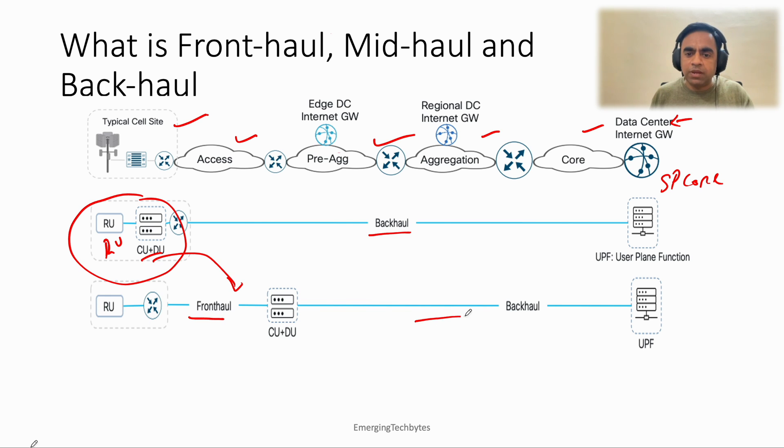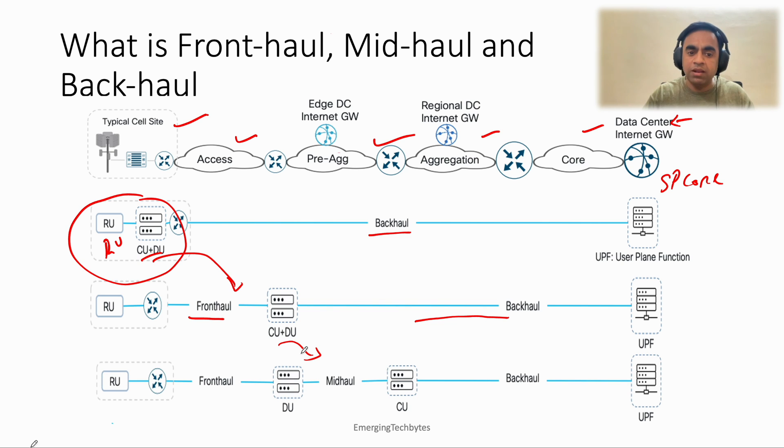As we saw in the previous slide, there is another level of optimization that can be done where we can split the CU and DU as well. So that now we have front haul, and if we split CU and DU, we need to connect them. That is mid haul. And then this is back haul, right?